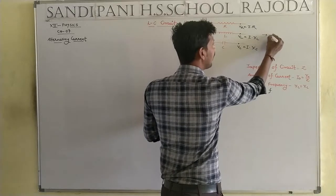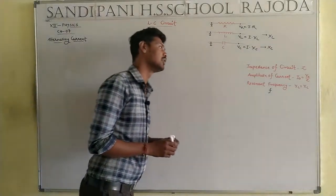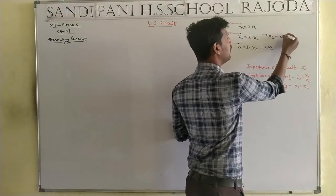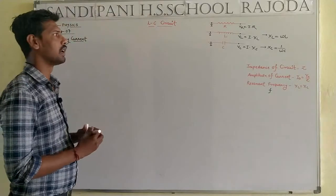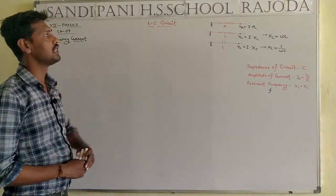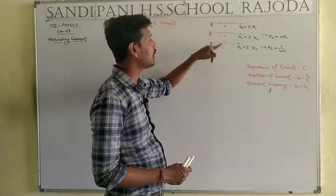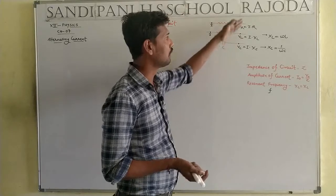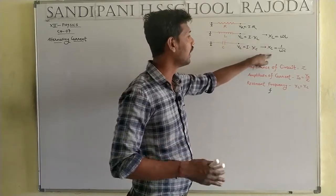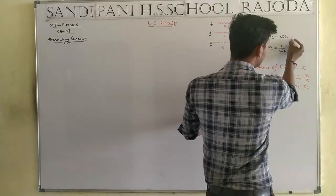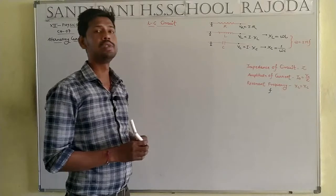What is the meaning of XL? XL is the reactance of the inductor, and XC is the reactance of the capacitor. The standard value of XL equals omega·L, and the value of XC equals 1/(omega·C), where omega equals 2·pi·F, and F means frequency.